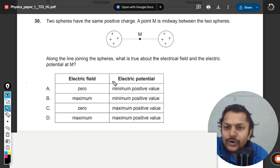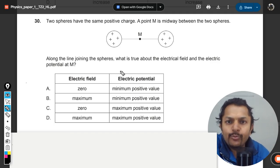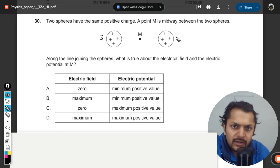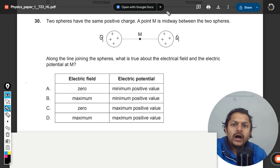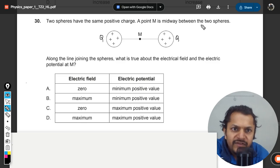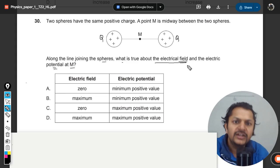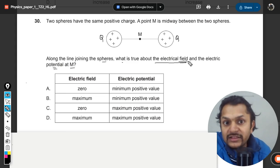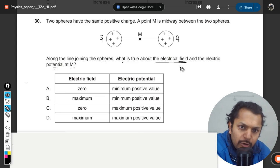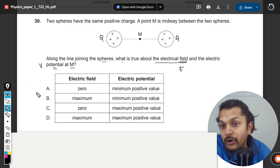Let's see this question. Two spheres have the same positive charge. Point M is midway between the two spheres along the line joining them. What is true about the electric field and the electric potential at M? When they write electric field, you have to read it as electric field strength, so they're talking about E. When they talk about electric potential, they're talking about V.